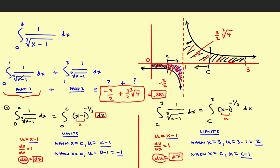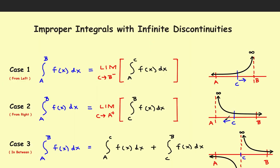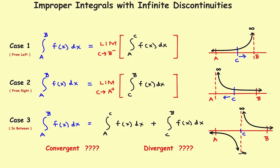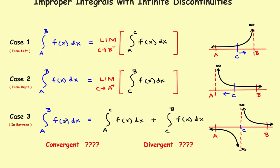So the total answer is Part 1 plus Part 2: negative 3/2 plus (3/2) times the cube root of 4, which works out to approximately 0.881. The approach is to split the integral into two parts, treat each one separately as its own improper integral, find the answer to each, and — since both are convergent — add them together. That's an example of this Case 3 interior asymptote problem.